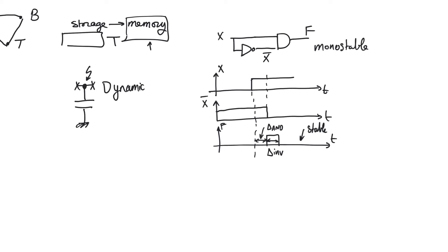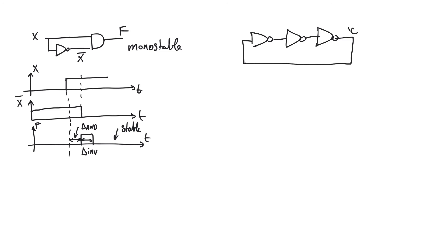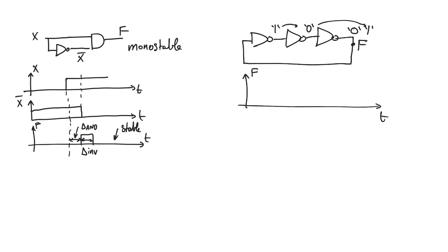Now let's consider the situation where we have three inverters — or any odd number of inverters — connected in feedback. If there is a zero at the output of the third inverter, this zero passes through the first inverter producing a one, through the second inverter producing a zero. So node F — the output of the first inverter — will remain at zero, then rise back up to one after three inverter delays.